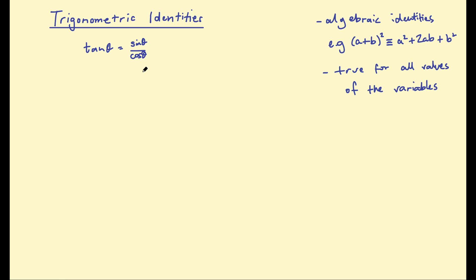That's a case where we have an identity and there are some conditions in which it's undefined. Another well-known trig identity is sine squared of theta plus cosine squared of theta equals 1. You'll notice I'm using equality signs — even though it's an identity, it will still use equality signs, but you will also sometimes see the identity symbol used. It is important to know the difference between the two.